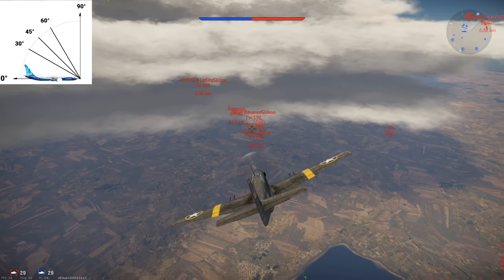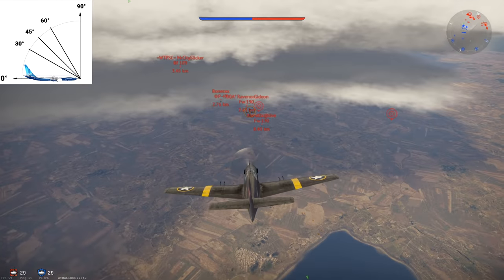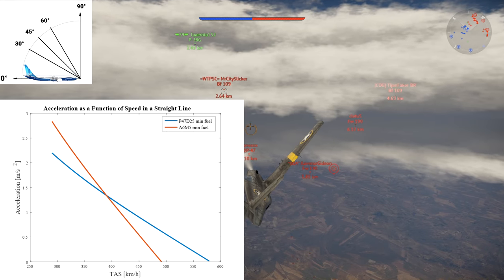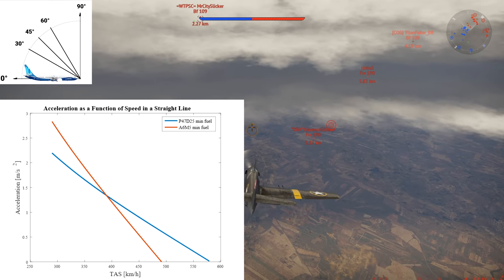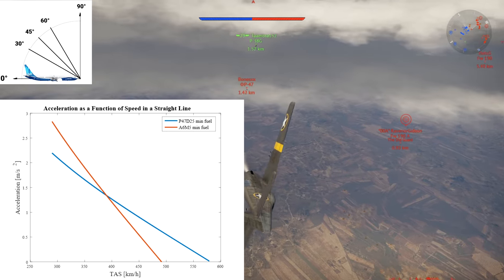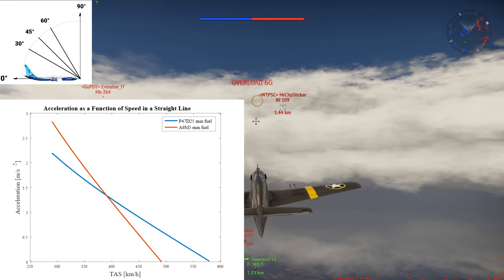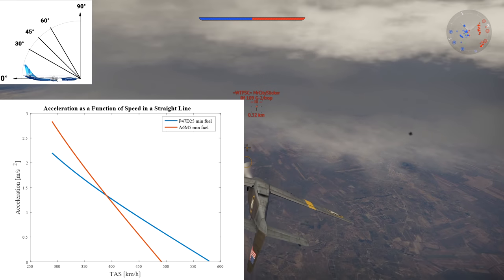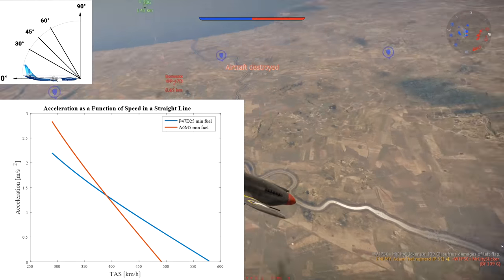Next up is the 0 degree dive, otherwise known as level flight acceleration, this time at sea level though. Again, the same tendencies appear. Indeed, not much is different between going a straight line and diving. The only difference is that your aircraft has a bit less drag since it doesn't have to create as much lift induced drag, and you reach higher speeds in a smaller amount of time thanks to gravity helping you.